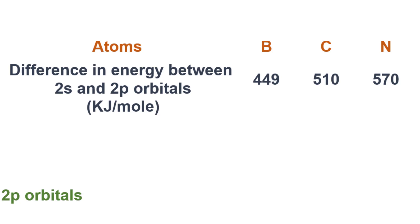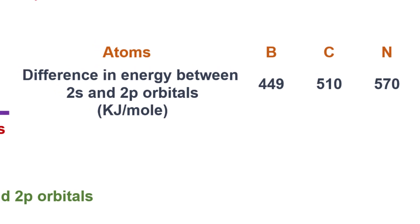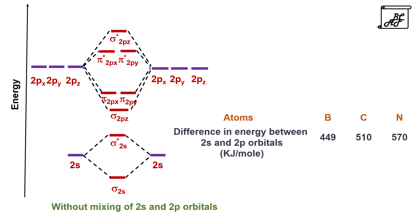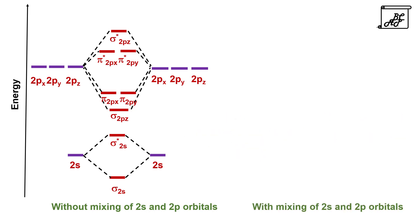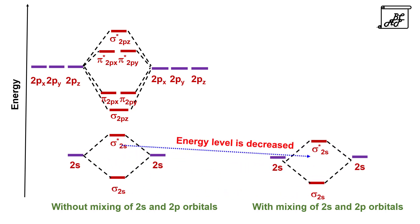In this case, as the gap between the 2s and 2p orbitals is very small and also the 2s and 2pz orbitals are symmetrically very close to each other, the 2s and 2pz orbitals, due to being close in energy and close in symmetry, mix with each other. As a result of this mixing of 2s and 2p orbitals, no new orbitals are formed.